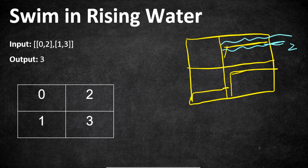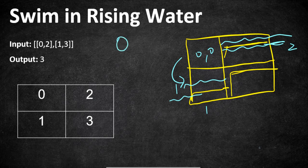Similarly, if the elevation at grid (1,1) is 1, then the water must be at level 1 or more so that we can swim from (0,0) to (1,1). At first there is no water — it starts raining and for every time unit t the water level will be t. That is, at time 0 there is 0 water at all the grids. At time 1 — whether that means 1 minute or 1 hour, the unit is not specified — the level of water at all grids will be 1.